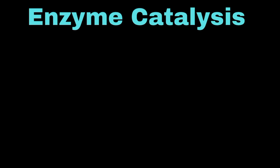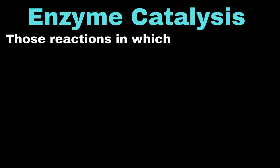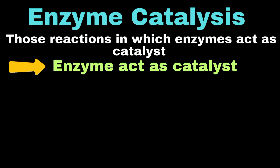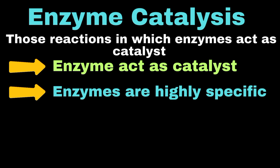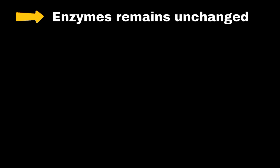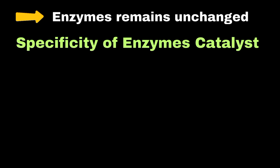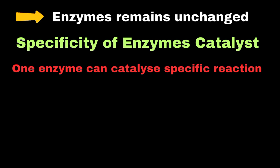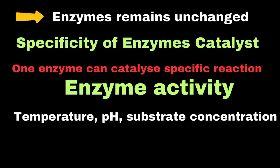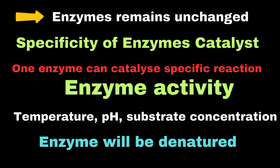Enzyme catalysis is a process in which enzymes, which are biological molecules mostly proteins, speed up chemical reactions in living organisms. These enzymes act as natural catalysts and are highly specific, meaning each enzyme works on a particular substance called a substrate. The substrate binds to the enzyme's active site, lowering the energy needed for the reaction and making it happen much faster. After the reaction, the enzyme remains unchanged and can be used repeatedly. For example, amylase breaks down starch into simple sugars but cannot break down proteins or fats. Enzyme activity can be affected by temperature, pH, and substrate concentration, and unsuitable conditions may cause denaturation.